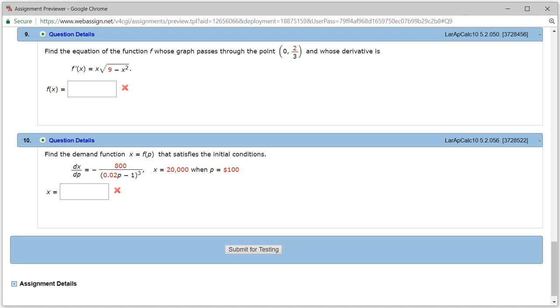All right. Let's look at homework 5.2, problem number 9. So we want to find the equation of the function f, given the derivative and the point that it goes through. So let's do that.